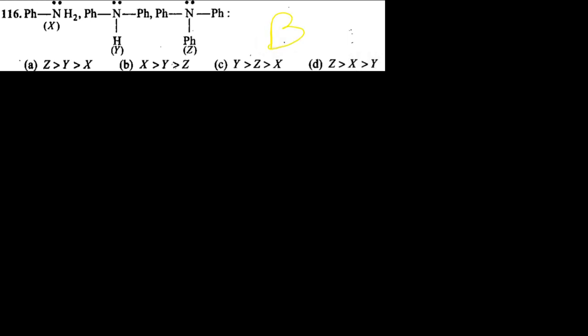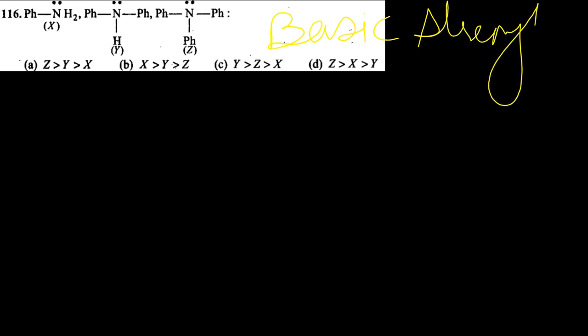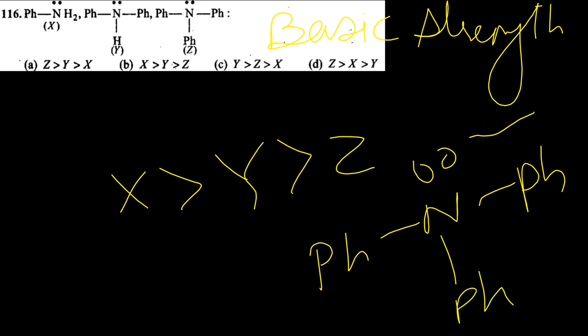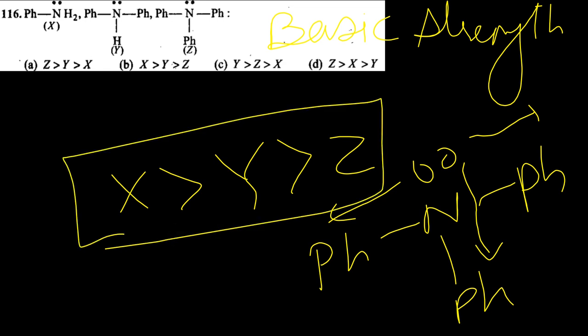They are asking about basic strength: if 3 phenyl groups are connected to nitrogen, the lone pair gets delocalized into 3 benzene rings, reducing the ability to donate. So delocalization is less than basic. Order is X > Y > Z, and the answer is option B.